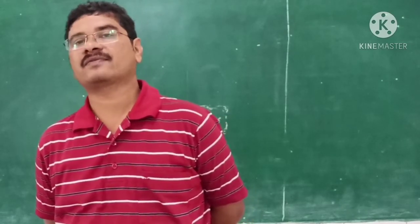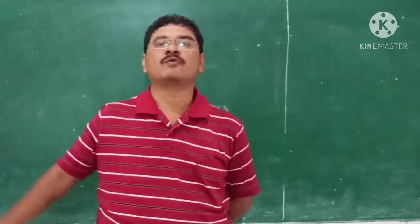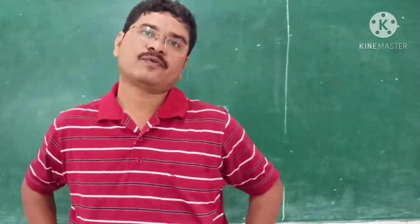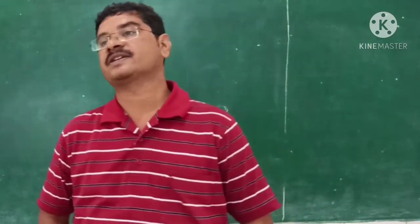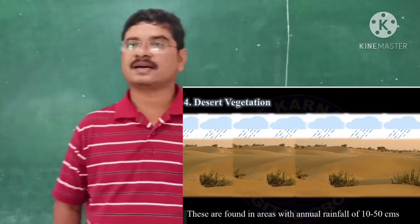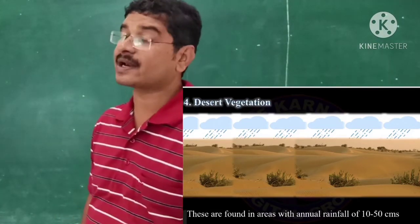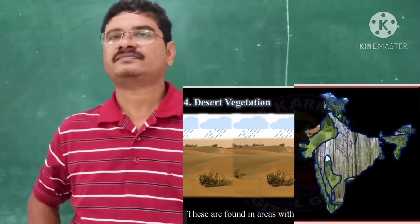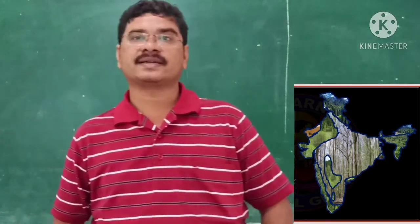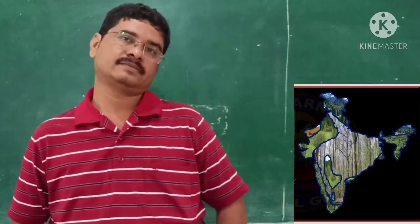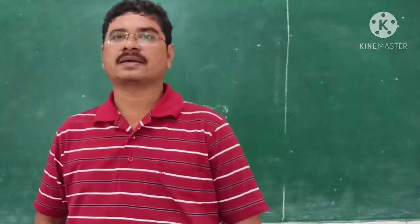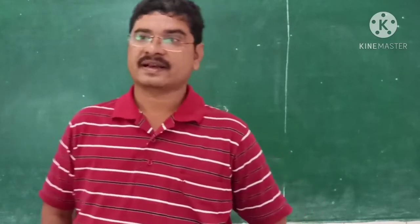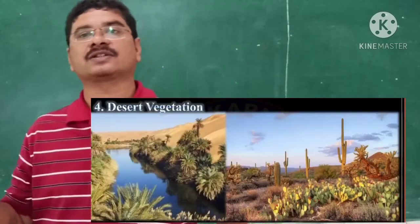Grasslands are mainly found in eastern states. They are found in Rajasthan, Punjab, and some parts of the Western Ghats and Cardamom Hills. The fourth type of forest is desert vegetation. These are found in areas with annual rainfall of very little — 10 to 50 cm. The Thar Desert, including parts of Punjab, Haryana, Rajasthan, and Gujarat, has scattered trees and thorny bushes on account of scanty rainfall.